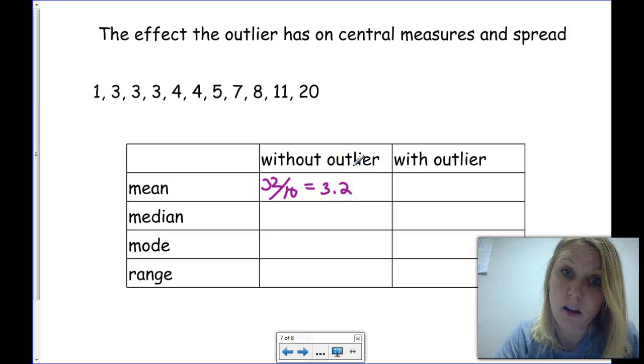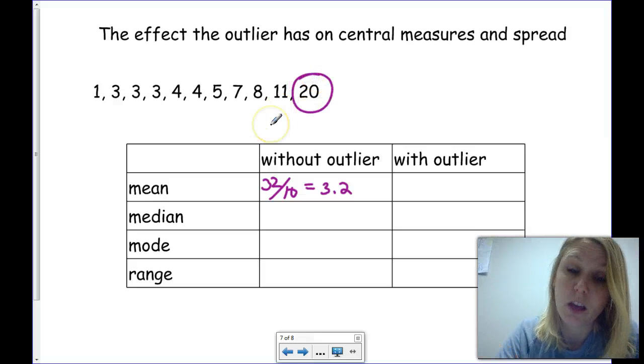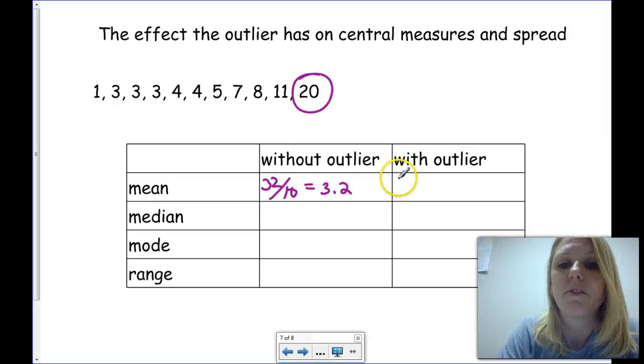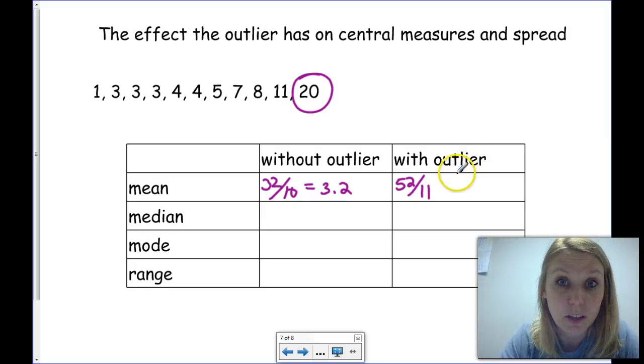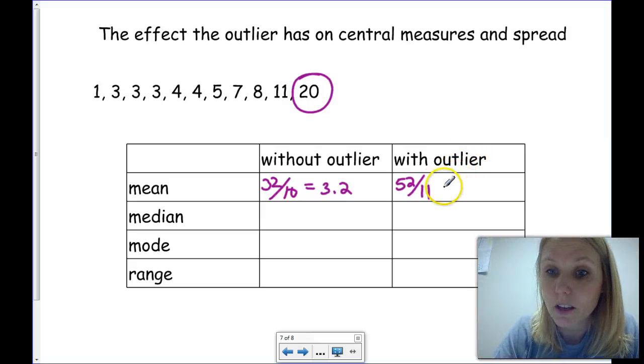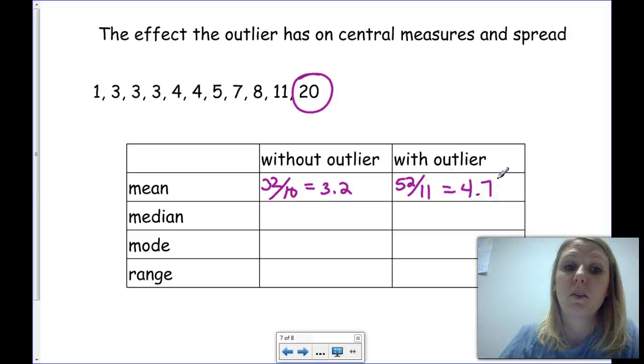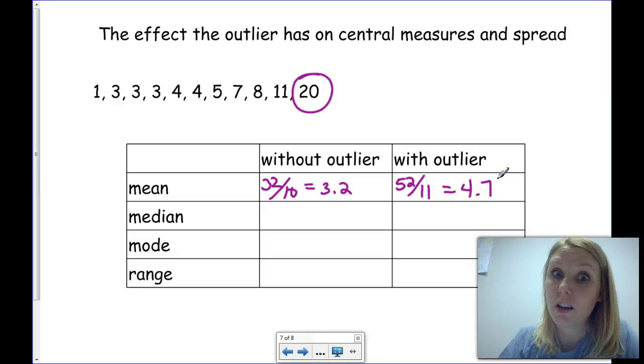If we counted the outlier in it, which is 20, into that, we would have 52 divided by 11 this time, because we have 11 data points instead of 10. This would give us a mean of 4.7. Well, clearly, the outlier does affect the mean.